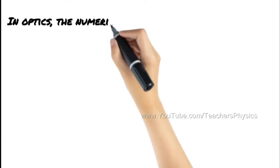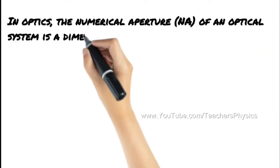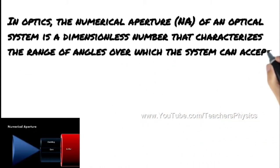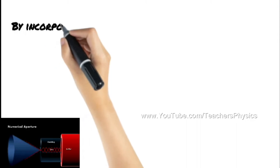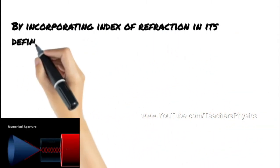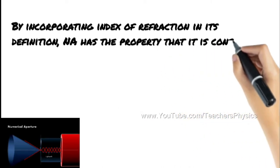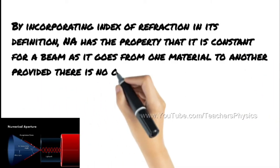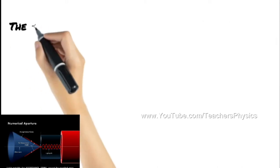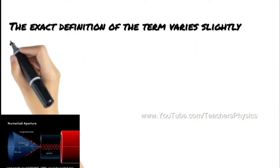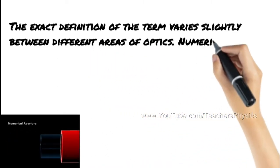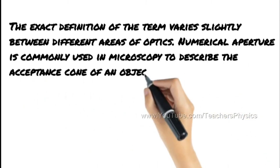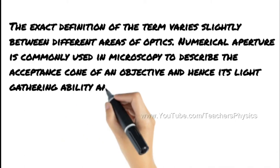In optics, the numerical aperture of an optical system is a dimensionless number that characterizes the range of angles over which the system can accept or emit light. By incorporating the index of refraction in its definition, numerical aperture has the property that it is constant for a beam as it goes from one material to another, provided there is no optical power at the interface. The exact definition of the term varies slightly between different areas of optics. Numerical aperture is commonly used in microscopy to describe the acceptance cone of an objective and hence its light-gathering ability and resolution.